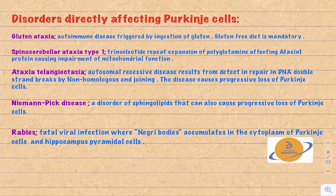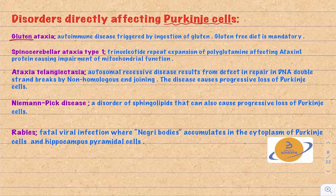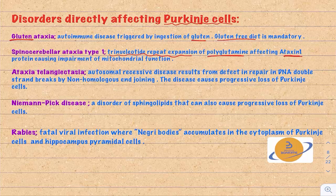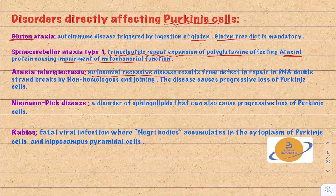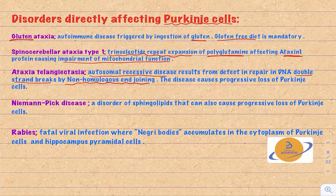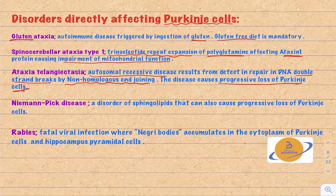Several disorders specifically target Purkinje cells. Gluten ataxia is an autoimmune disease triggered by gluten ingestion; a gluten-free diet is mandatory. Spinocerebellar ataxia type 1 is a trinucleotide repeat expansion of polyglutamine affecting the ataxin-1 protein, impairing mitochondrial function — the same pathophysiology as Huntington's disease but affecting a different protein. Ataxia telangiectasia is an autosomal recessive disorder from defective DNA repair of double-strand breaks via non-homologous end joining, causing progressive loss of Purkinje cells.